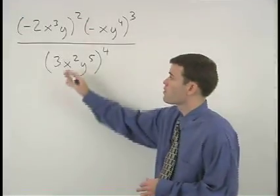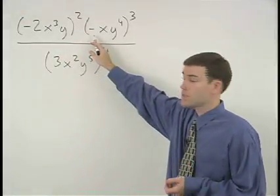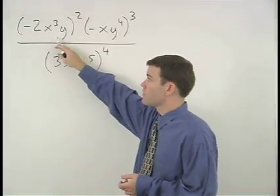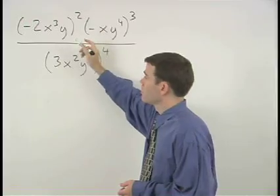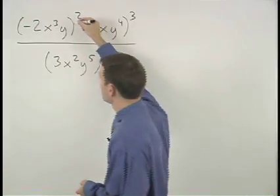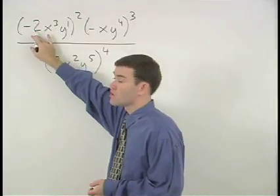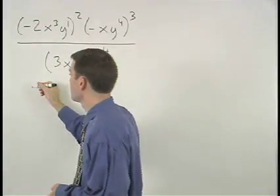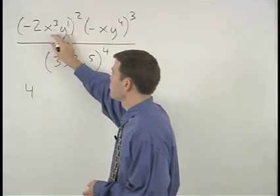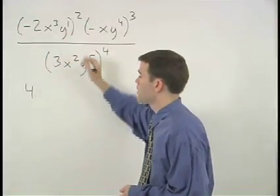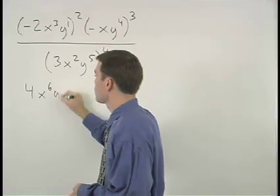First, we apply the power rule for each set of parentheses in the numerator. To simplify negative 2x to the third y squared, think of y as y to the first and square the coefficient of negative 2 to get positive 4, and multiply each of our exponents by 2 to get x to the sixth y squared.